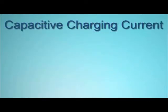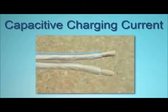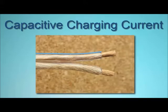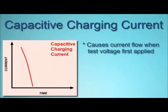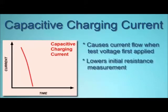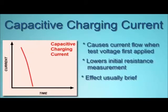When two conductors are in close proximity separated by an insulator — for example, a length of common two-wire electrical cord — they can act as a capacitor. When test voltage is first applied, this capacitive charging effect results in current briefly flowing through the conductors until the voltage across the insulation reaches the test voltage. Consequently, the initial resistance measurement will be relatively low and then quickly rise as the capacitance becomes fully charged. This effect is usually brief, often lasting less than a second, although in very long cables or large motors this can last much longer, up to 30 minutes or more. Capacitive charging current is not an indicator of insulation quality, but it needs to be accounted for to assure your measurement is meaningful and relevant.